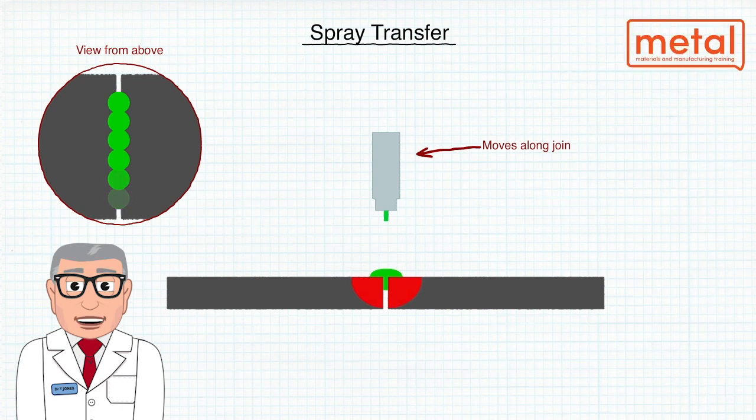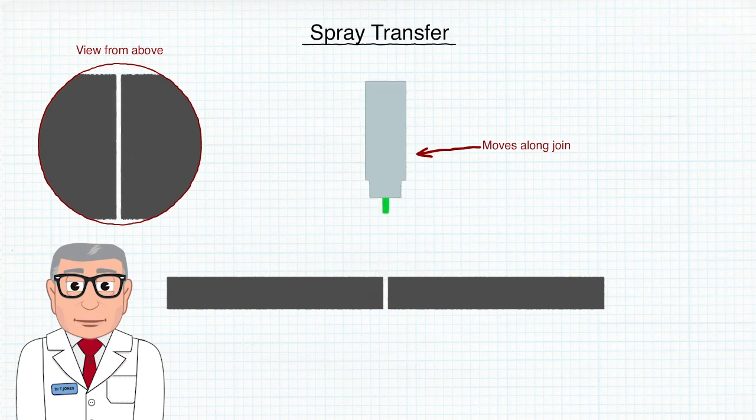As the current increases, the drop size decreases because the force increases and therefore the frequency of drops increases. The deposition rate and efficiency is relatively high.